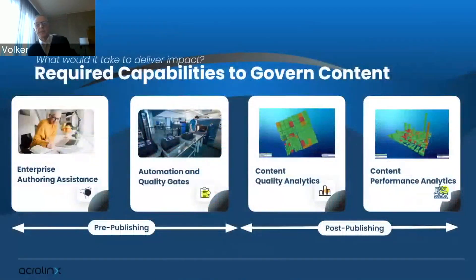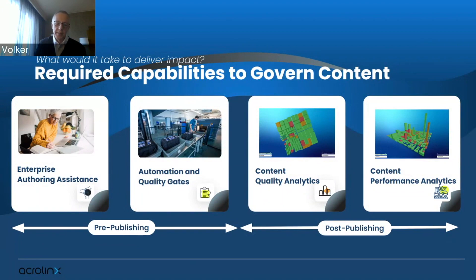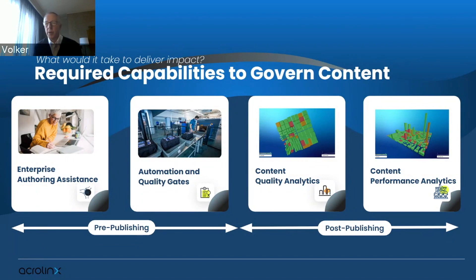The required software capabilities include: supporting enterprise authoring systems in all their complexity; providing automation by tying content governance into the repositories that hold existing content to establish a baseline of quality; content quality analytics connected to your entire state of content to ensure improvement over time; and content performance analytics — plugging in quantitative data from Google Analytics, Adobe Analytics, your marketing automation platform, or support cost data — to tie content quality to resulting business outcomes in the post-publishing world.